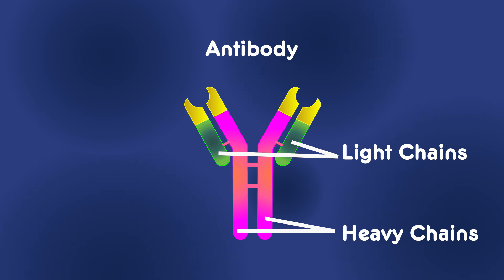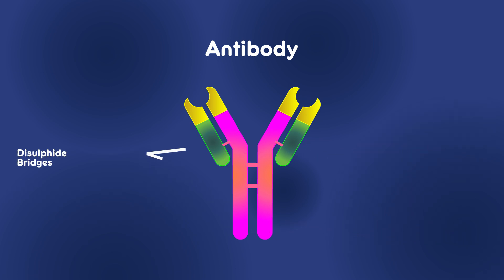The terms light and heavy simply mean larger and smaller. The four polypeptide chains are connected by disulfide bridges.